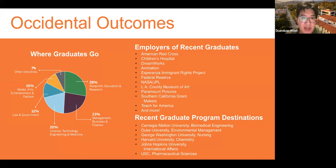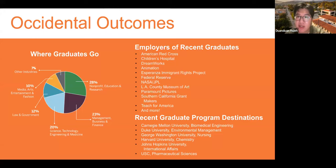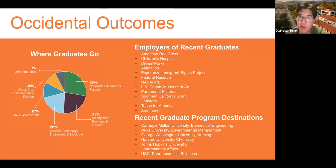Why does Columbia partner with Occidental specifically? Columbia has many 3+2, 4+1, and 4+2 programs partnering with liberal arts colleges around the country — Oxy is just one of them. Regarding gender-neutral floors: a gender-neutral floor means the bathrooms in that residential hall are gender-neutral. Students choose to live there — you won't be placed there if you're not comfortable with it. It's available for students who identify as non-binary or gender-neutral.